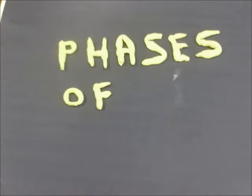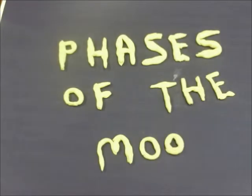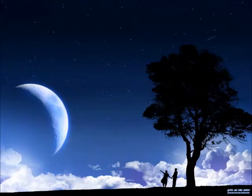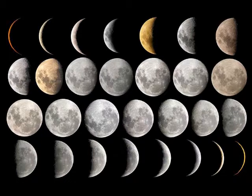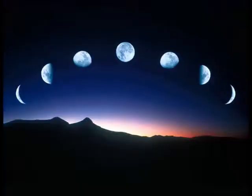Phases of the Moon. Have you ever looked up into the night sky and wondered why the moon appears to change its shape? No doubt each month you've observed these different shapes many times before. The changing shape of the bright part of the moon that we see from the Earth is called a phase, and these phases make up the lunar cycle.